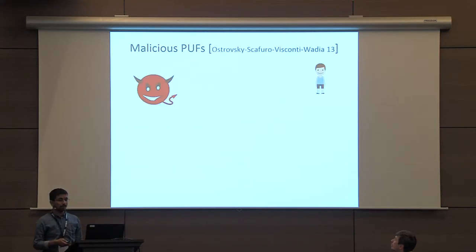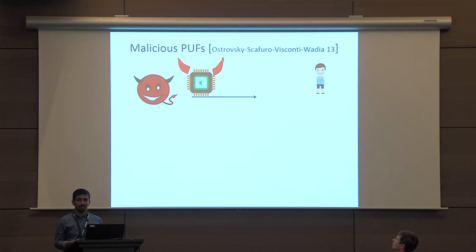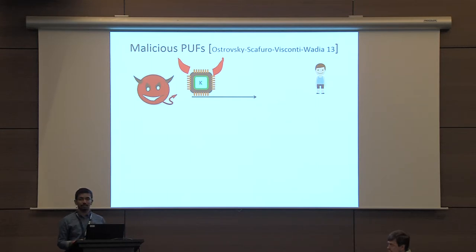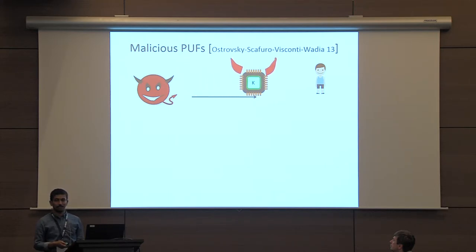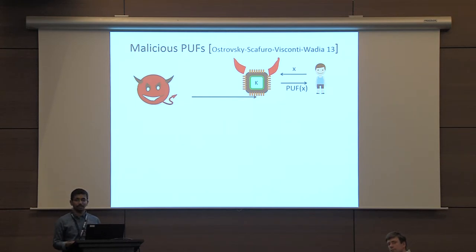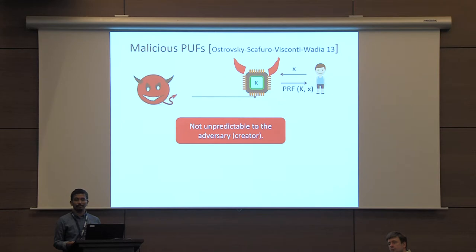The notion of malicious PUFs was introduced by Ostrowski and others. In the previous setting, a PUF that any party creates — including an adversary — should be both unpredictable and unclonable even to the creator. However, an adversary can do something more: if an adversary creates a PUF, it might not be unclonable or unpredictable to that creator. For example, an adversary could embed a PRF key K inside the PUF and send it to an honest party. The honest party's queries produce output unpredictable to the evaluator, but the adversary — knowing the PRF key — can predict the output.